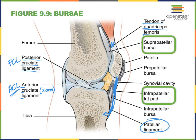Some of the additional structures we come across in synovial joints might be some fatty pads, as shown here. And then the so-called bursae—the bursae, or bursa singular, are sac-like structures filled with synovial fluid.